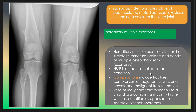Hereditary multiple exostosis is seen in skeletally immature patients and consists of multiple osteochondromas. It is autosomal dominant.